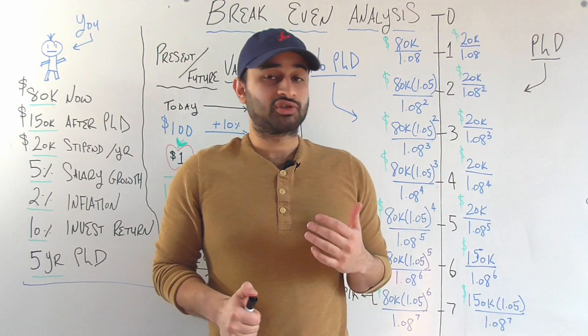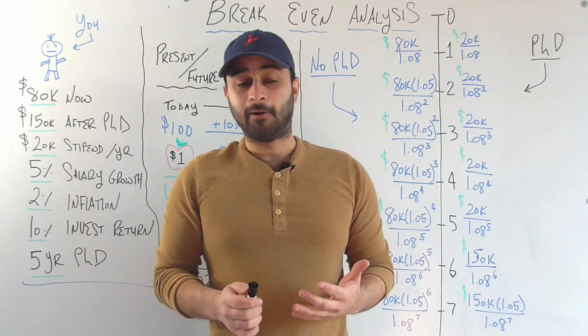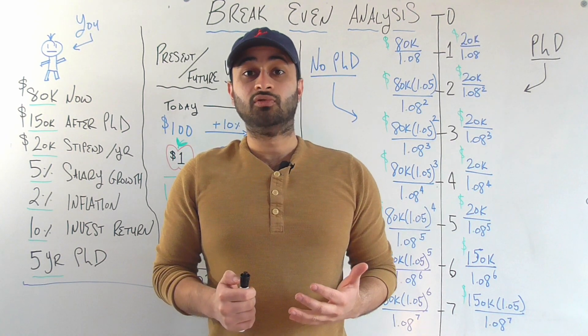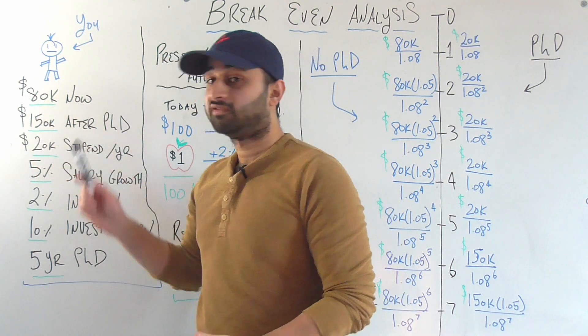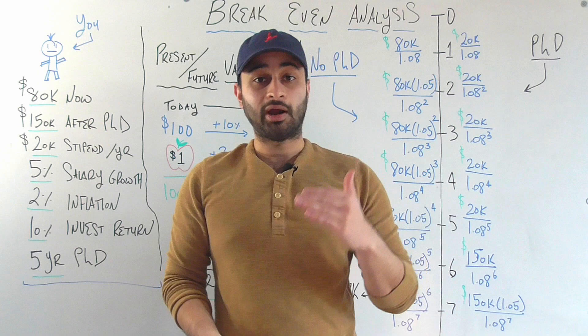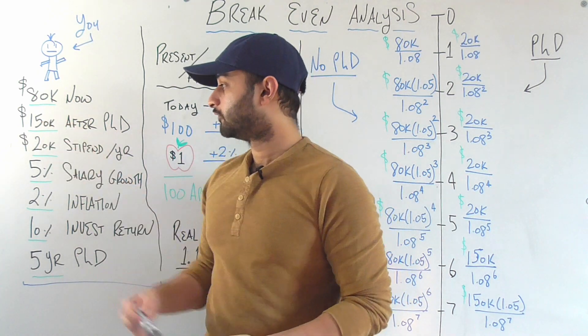Let's say now that you've also done your research for your PhD program, and you're convinced that if you get your PhD, afterwards you'll be able to land a job where you're going to start at $150,000 per year, so quite a jump between $80,000 and $150,000.